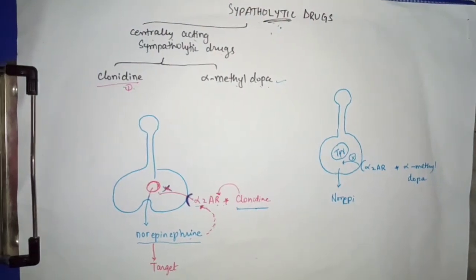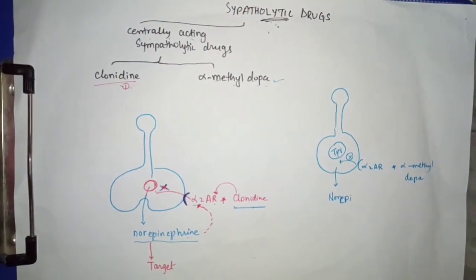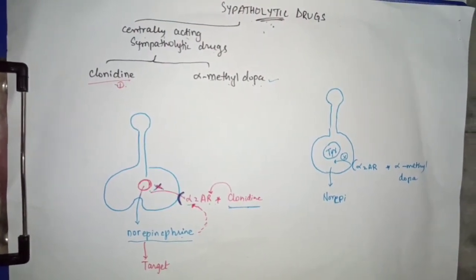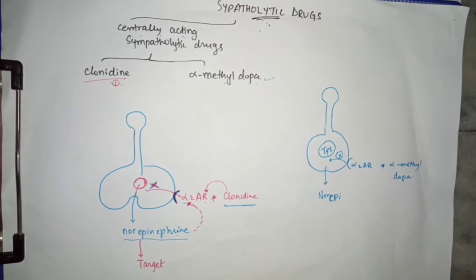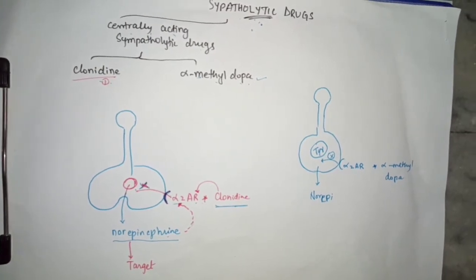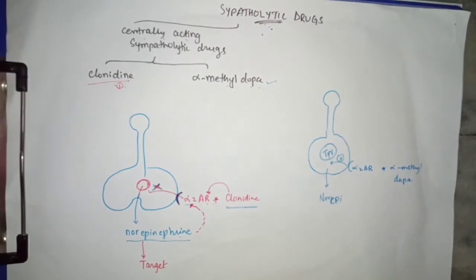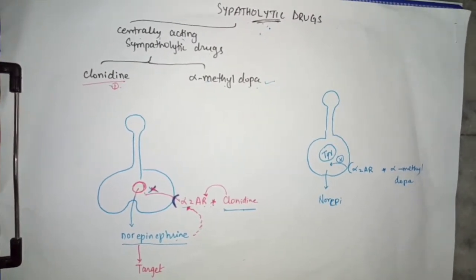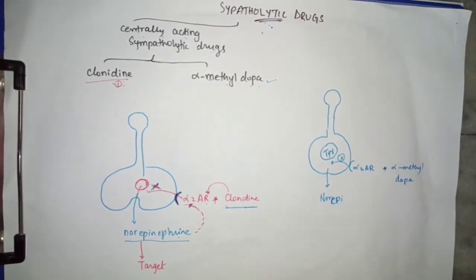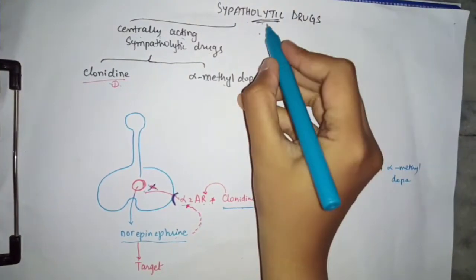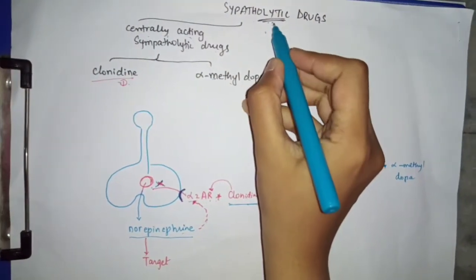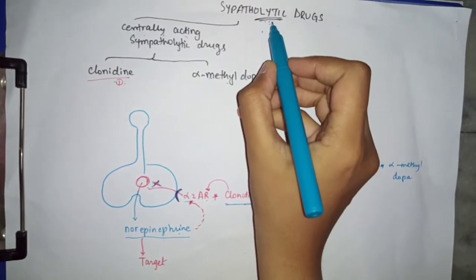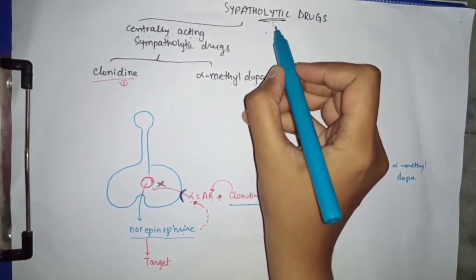The main idea of anti-hypertensive drugs is to break down sympathetic outflow or to inhibit the vasomotor center. These kinds of drugs are called sympatholytic drugs because they break down the normal sympathetic response and bring about a decrease in blood pressure.